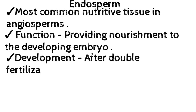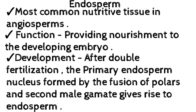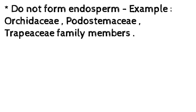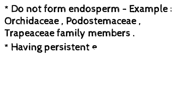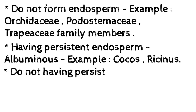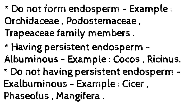Development occurs after double fertilization. The primary endosperm nucleus (PEN) is formed by the fusion of polar nuclei and the second male gamete, and gives rise to the endosperm. Angiosperms that do not form endosperm include families such as Orchidaceae, Podostomaceae, and Trapaceae. Families having persistent endosperm are albuminous — examples include Cocos nucifera and Ricinus. Those not having persistent endosperm are exalbuminous — examples include Cicer and Phaseolus and Mangifera.